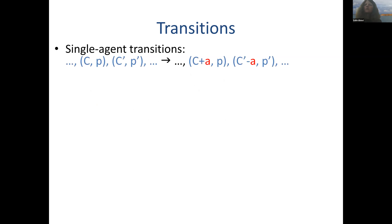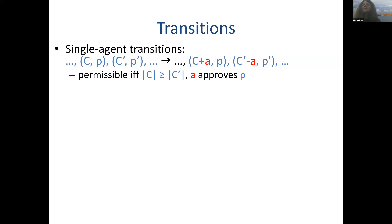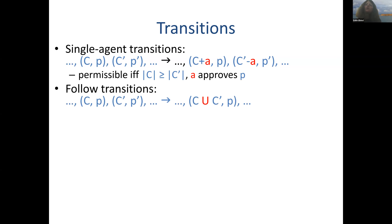Let me define several types of transitions. The most basic, familiar from coalition games, are single agent transitions. An agent sitting in coalition C* with proposal P* moves to coalition C with proposal P. For this transition to be valid, C must be at least as large as C*, so that the agent ends up in a bigger coalition, and the agent must approve P so they don't end up in a coalition they dislike.